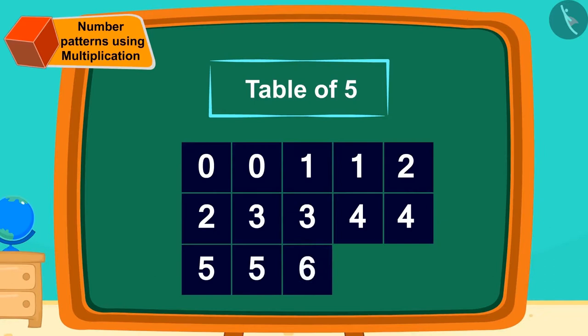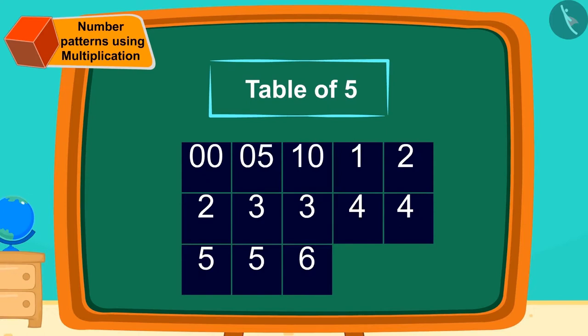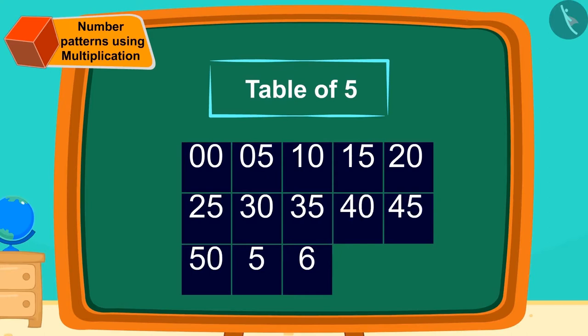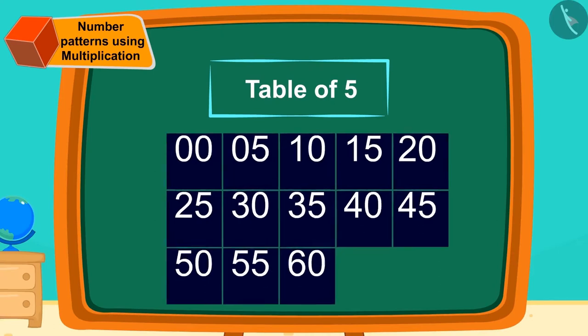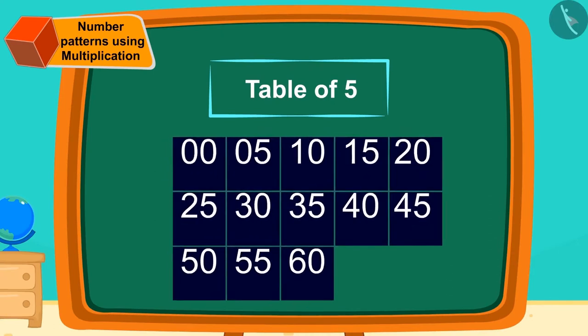Now, we will write 0, 5, 0, 5, these patterns behind these digits. Did you recognize the pattern? Yes! It is the multiplication table of 5. Isn't it easy?